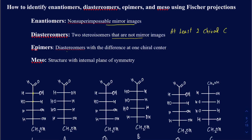Diastereomers are not going to be mirror images of one another. The epimer is a type of diastereomer where there is a mismatch only at one location. Usually for something to be considered an epimer, you would have three chiral centers or more, and there is going to be a mismatch on the chirality of only one center. Meso compounds are going to have an internal plane of symmetry where one side of the plane is going to be the mirror image of the other side.